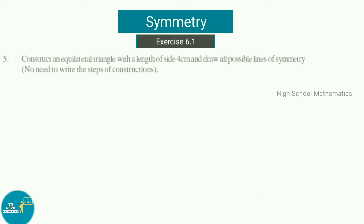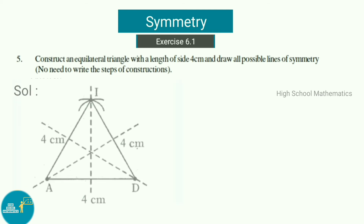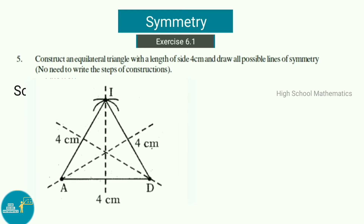Question 5: Construct an equilateral triangle with a side length of 4 centimeters and draw all possible lines of symmetry. We draw a line segment AD of length 4 centimeters. With A as center, we draw an arc of radius 4 centimeters, and with D as center, we draw an arc of radius 4 centimeters. For an equilateral triangle, there are three lines of symmetry, and we have drawn them accordingly.